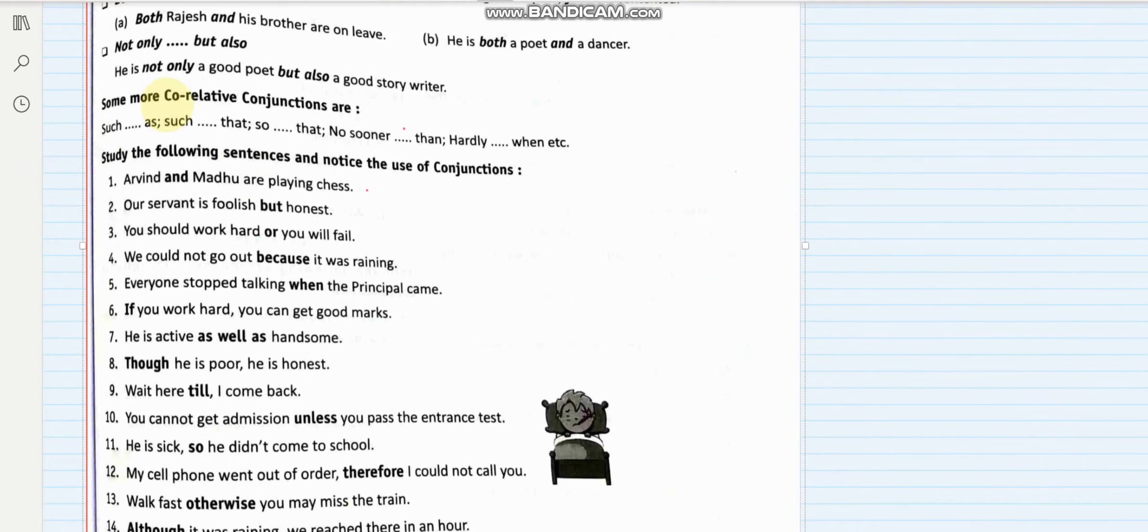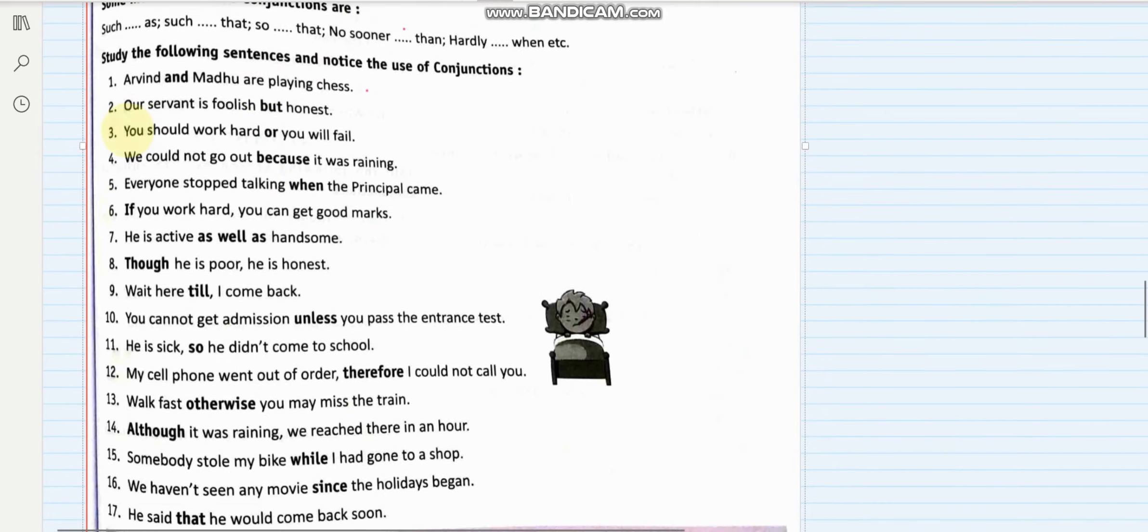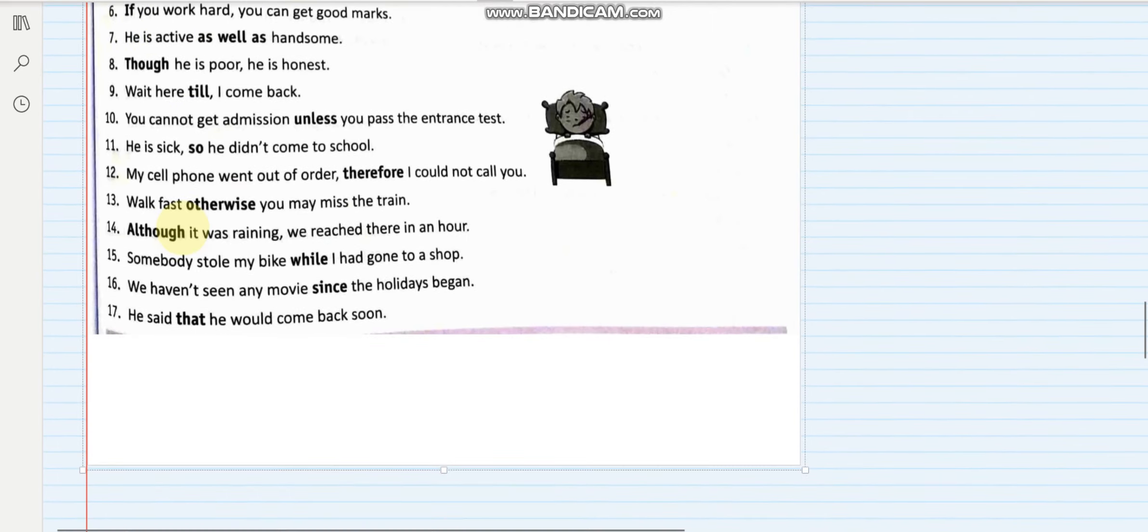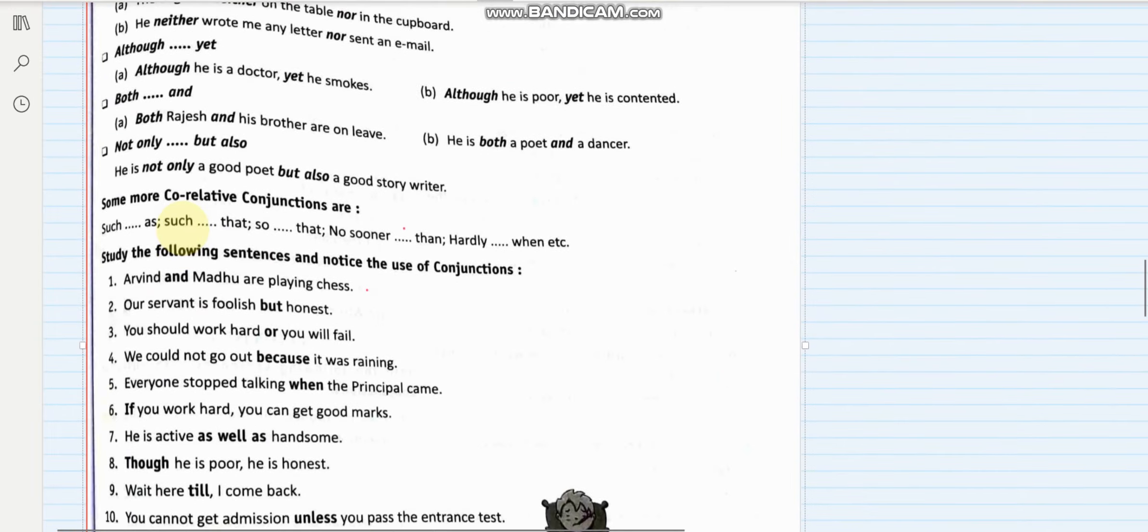Now some of the common correlative conjunctions are such as, such that, so that, no sooner than, hardly when. So these are some of the examples. Please go through all these examples to have a better clarity of all the things.